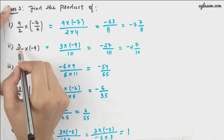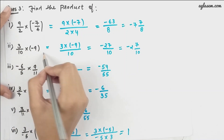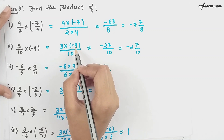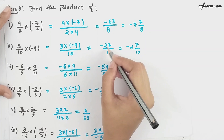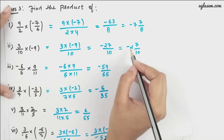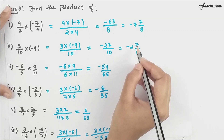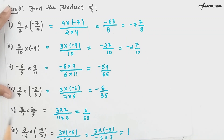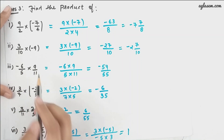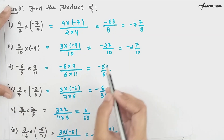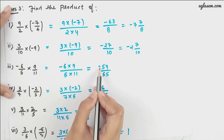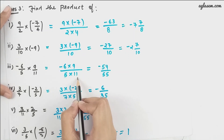The second product is 3/10 × (-9). We get 3 × 9 = 27, and the minus sign remains, giving -27/10. Converting to mixed fraction: -2 7/10. Moving further, -6/5 × 9/11: we get 6 × 9 = 54, with the minus sign remaining, and 5 × 11 = 55, giving -54/55.